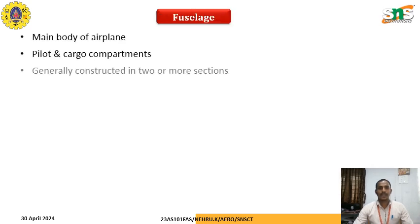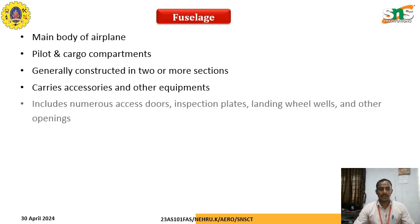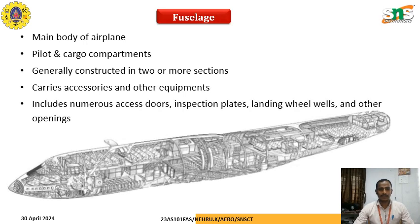The fuselage is the main body of the airplane, housing the pilot and cargo components. Generally, construction involves two or more sections of the fuselage — the cone section, nose section, body section, and tail section — which carry accessories and all equipment. It includes numerous access doors, inspection plates, landing wheels, and other openings placed in the fuselage.